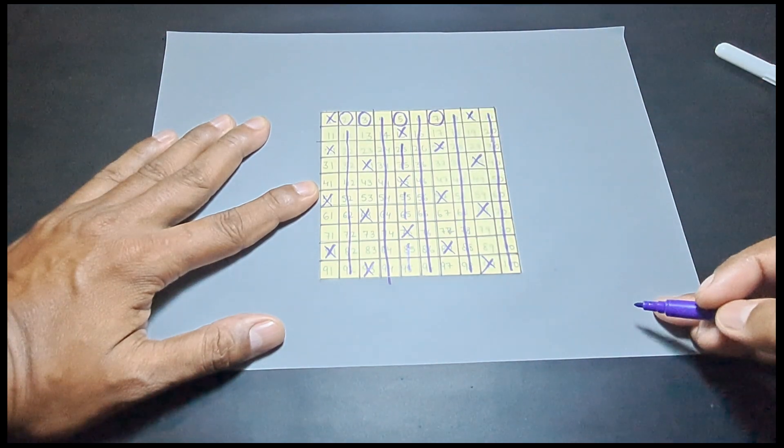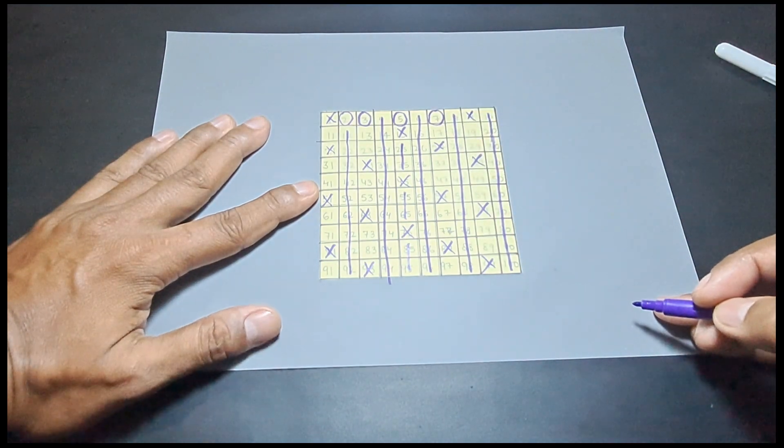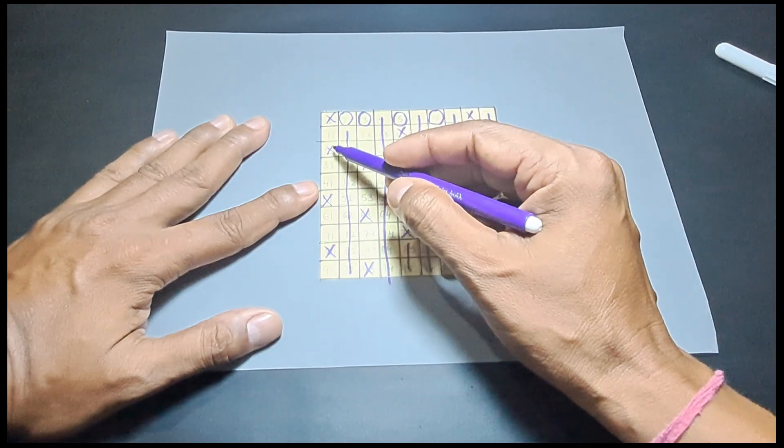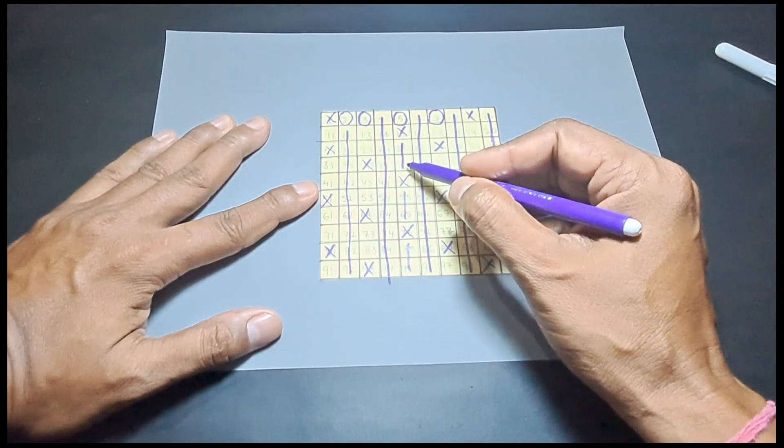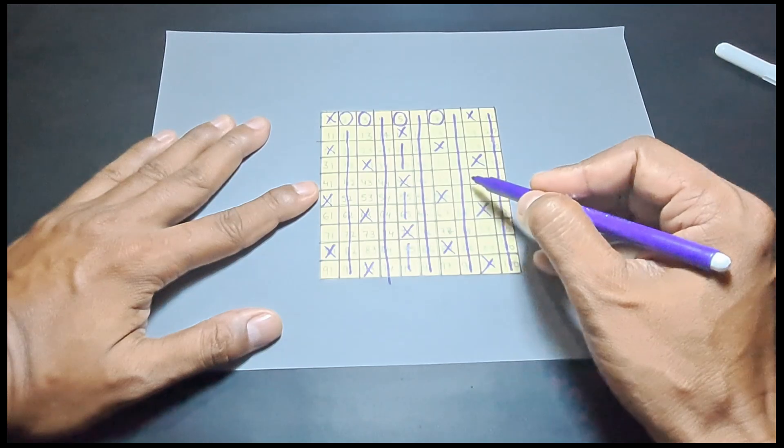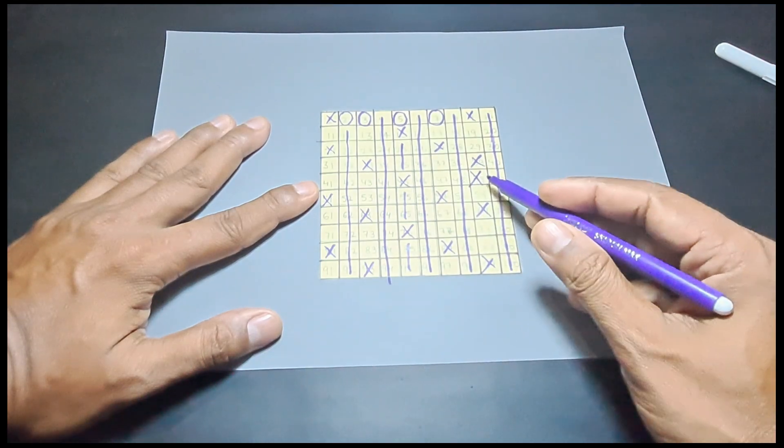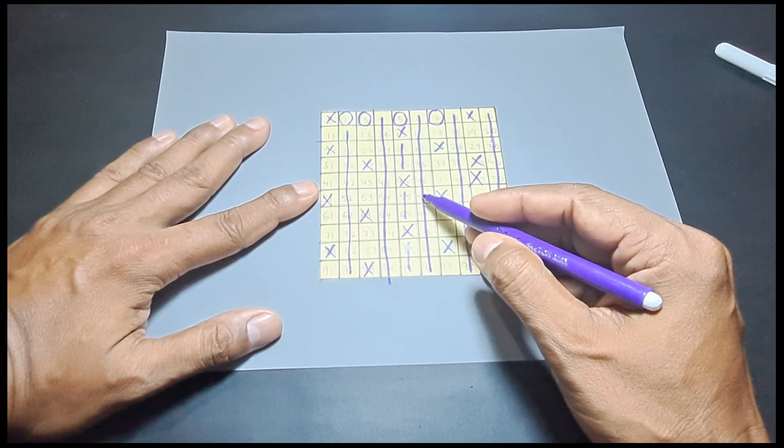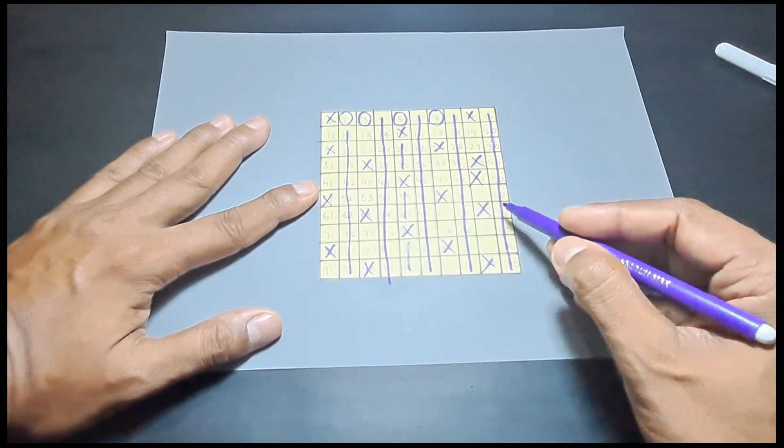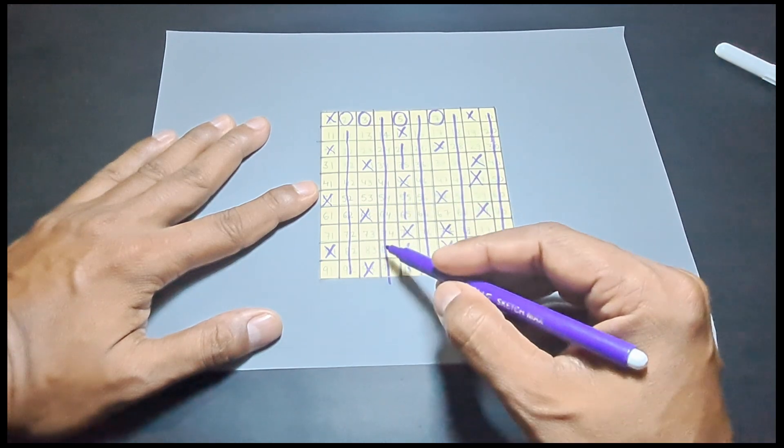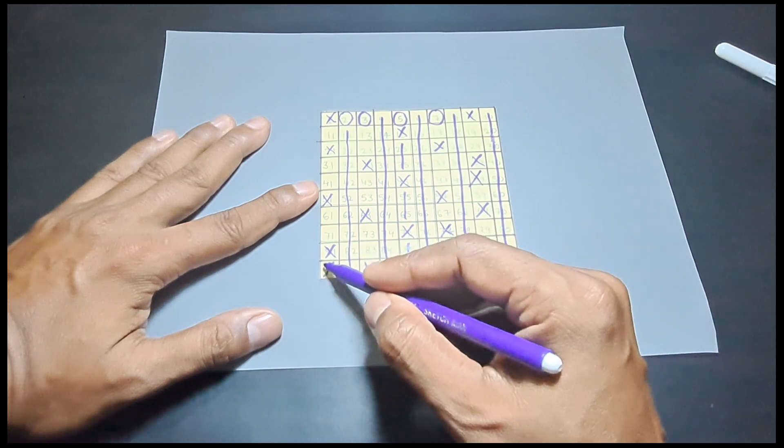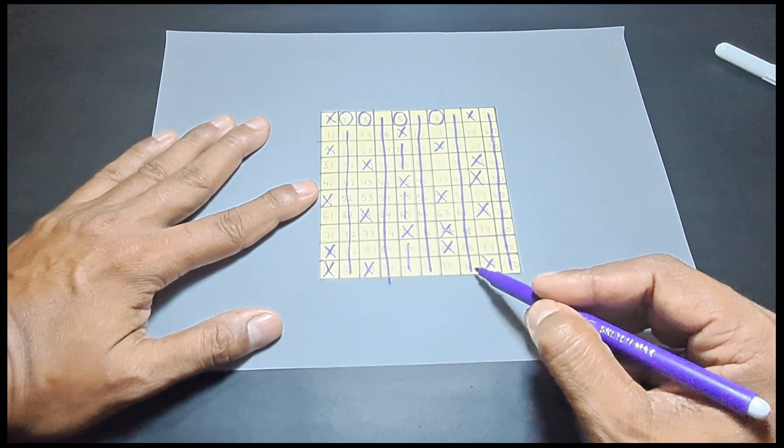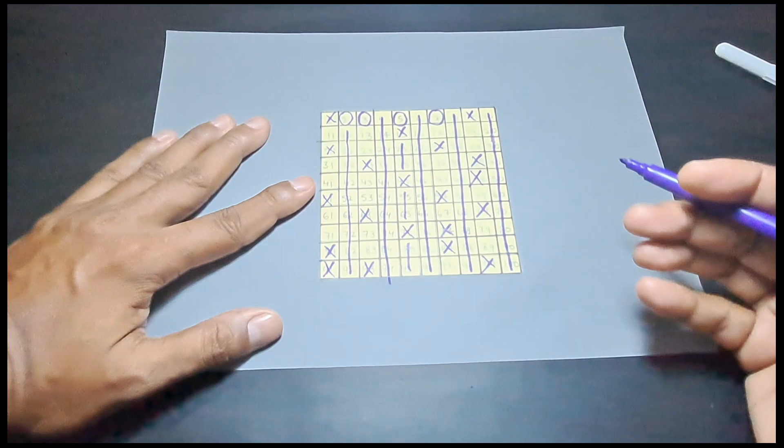Likewise, we can encircle 7 and cancel out the multiples of 7. 14 is already cancelled, 21 cancelled, 28 cancelled, then 35, 42, 49, 56, 63, 70, 77, 84, 91, and 98. So all of them have been cancelled.